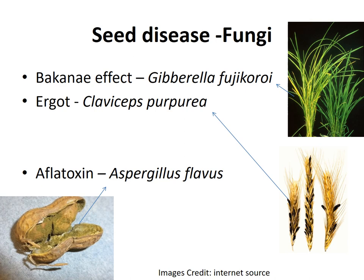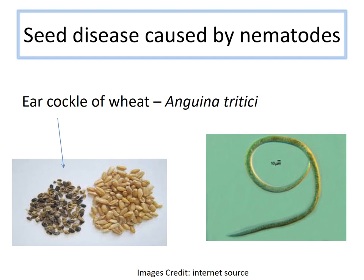Seed disease caused by nematode: nematodes belong to the animal kingdom. Any wheat seeds that turn black due to the presence of nematodes should be avoided. The pathogen here is Anguina tritici, causing wheat kernels to resemble peppercorns. The disease is ear cockle of wheat, also called peppercorn disease.